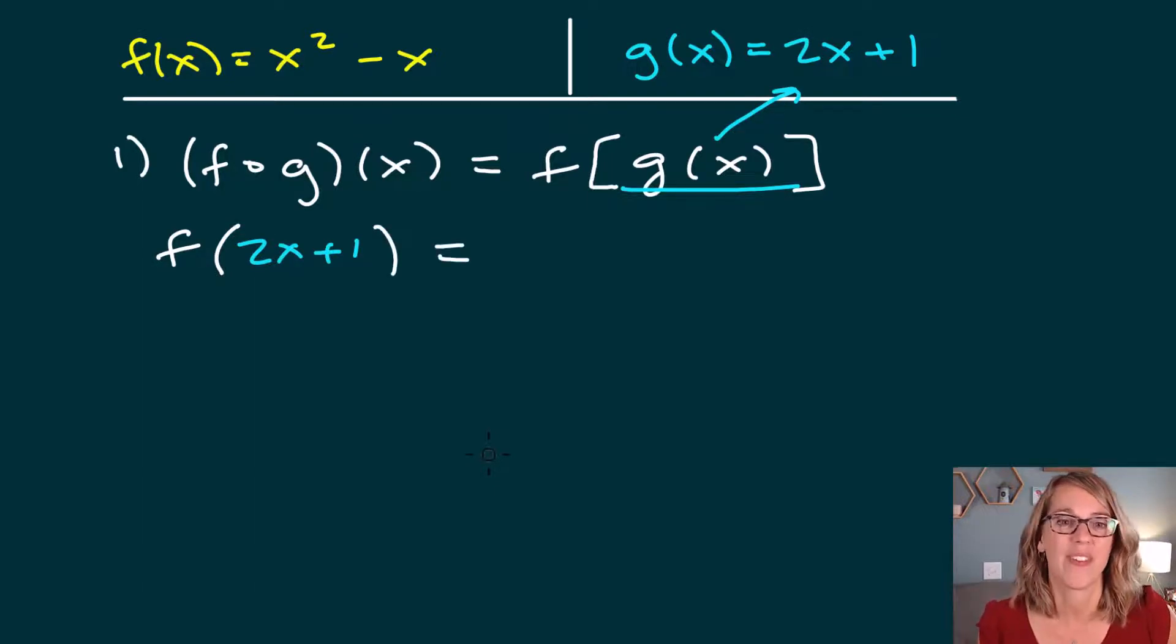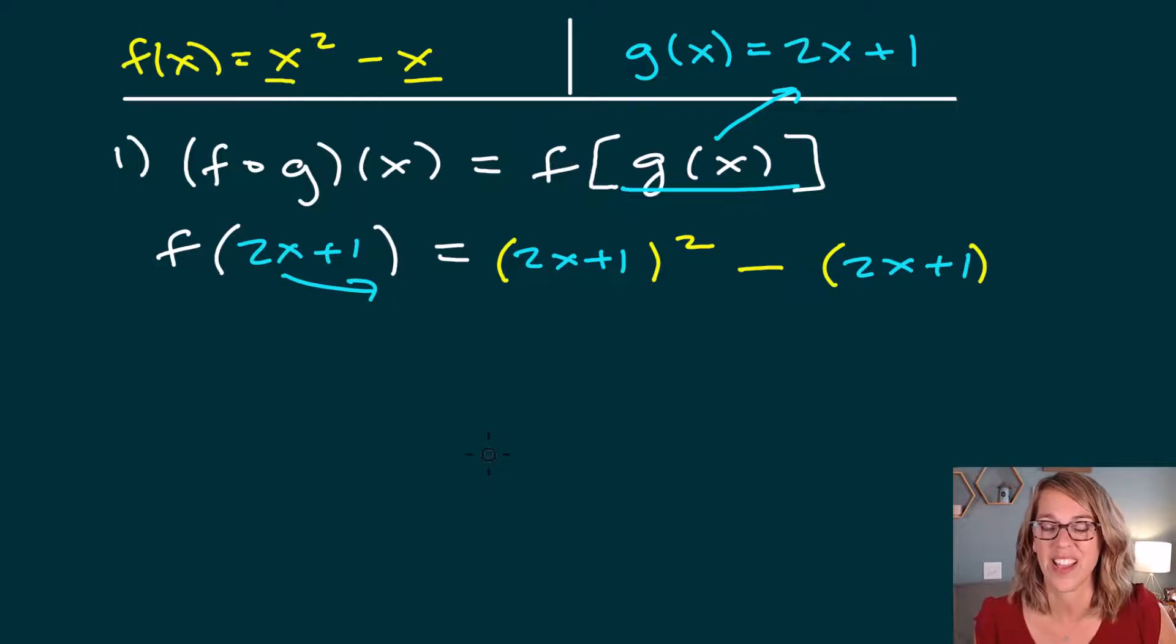And what does my function f do? It takes my input and it squares it. So input squared and then it subtracts the input minus the input. What are we putting into f? We are putting in a 2x plus 1 and a 2x plus 1. Now we've got a little bit of algebra to do. I'm squaring the first 2x plus 1. So I've got to multiply it by itself. We're going to end up foiling that. So I've got 2x plus 1 times 2x plus 1.